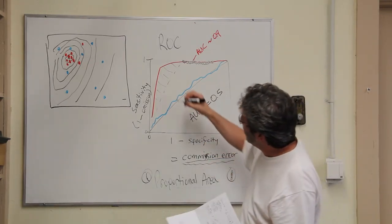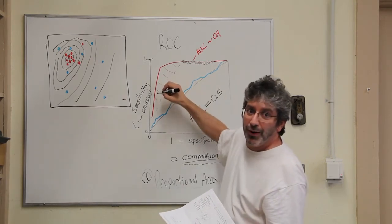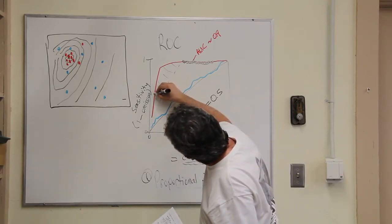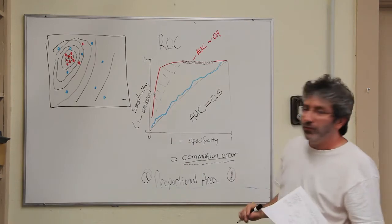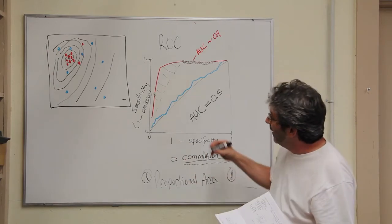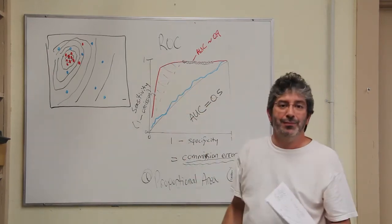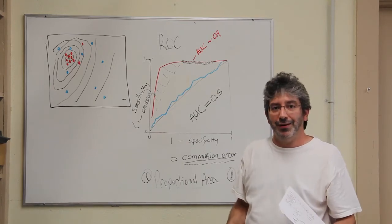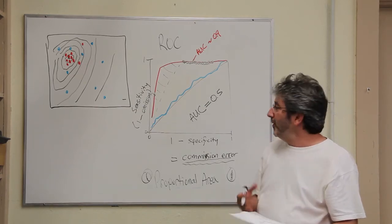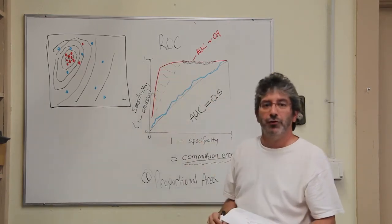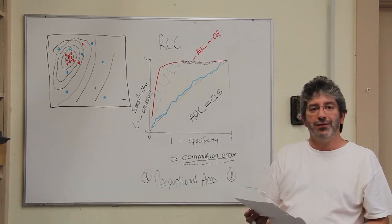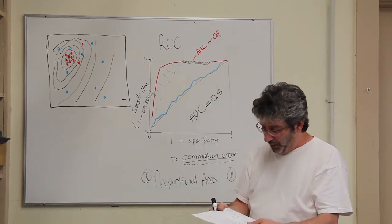Yet another point is that there are parts of the ROC curve that are, I would argue, not relevant. For example, this point is a model prediction that, when challenged with independent occurrence data, fails half of the time — it has a 50% omission rate. That is not a very good model prediction. So in that sense, parts of this curve are really things that I don't want to pay attention to, and I don't want to use to weight my models.